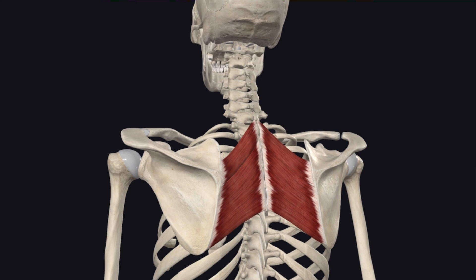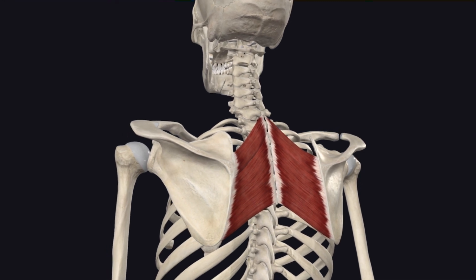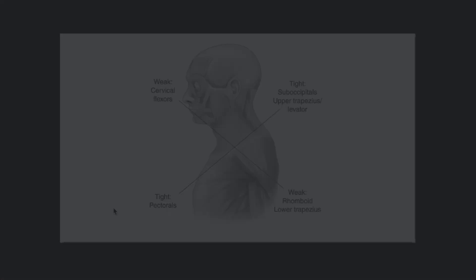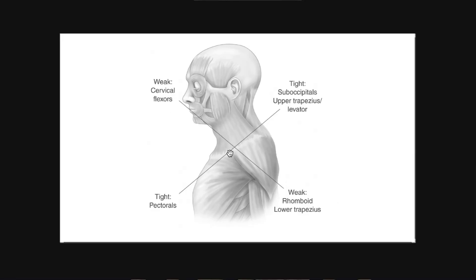Weakness or poor motor control of these muscles often contributes to postural dysfunction such as scapular protraction and forward shoulder posture — commonly seen in patients with upper cross syndrome. We see those big bodybuilder muscle groups like the pecs and upper traps get overworked, while the less-trained muscles — the rhomboids, mid to lower traps, and deep cervical flexors — don't get enough work. We end up with that cross of tight, overworked muscles versus weak, stretched-out muscles, and you see the postural abnormality along with sometimes pain and discomfort.